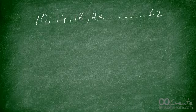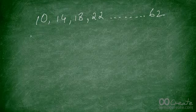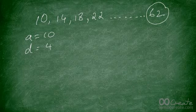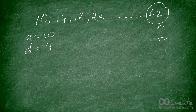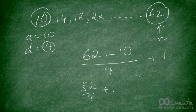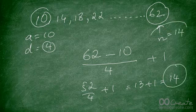Now we'll learn how to figure out the position at which a certain number occurs. Given a sequence starting at 10, 14, 18 and so on, a = 10 and d = 4. At what position does 62 occur? Take the value 62, subtract the first term (10), divide by d (4), then add 1: (62 − 10) / 4 + 1 = 52/4 + 1 = 13 + 1 = 14. So 62 is the 14th term.